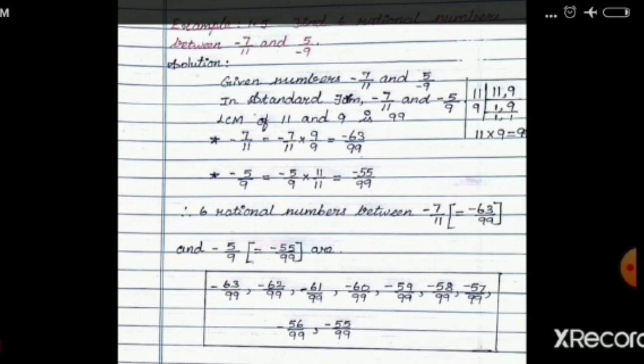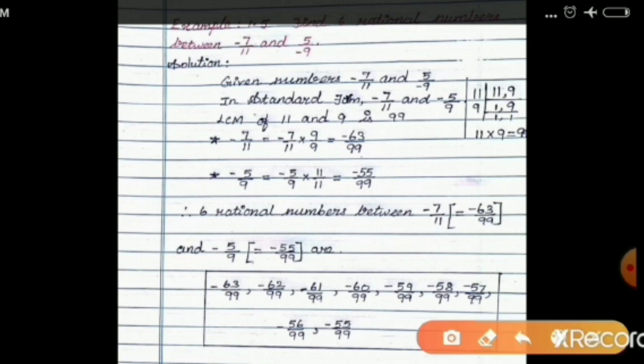Next, we compare the denominators. If they are the same, we can easily compare the numerators. Here we have different denominators — 11 and 9. To convert to the same denominator, we take the LCM of 11 and 9. Using the 11 times table and 9 times table, 11 into 9 gives us 99. So LCM is 99.